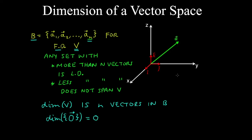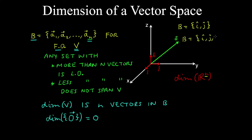Let's look at a few examples. We'll find the dimension of the vector space R^n. We know that the basis for this vector space has n vectors. The standard basis for R^2 had two vectors, and the standard basis for R^3 had three vectors, so these effectively have a dimension of 2 and 3. Therefore the dimension of R^n is n, because the standard basis has n vectors.